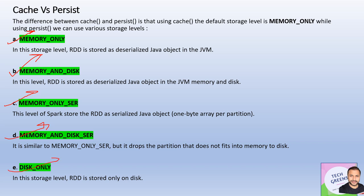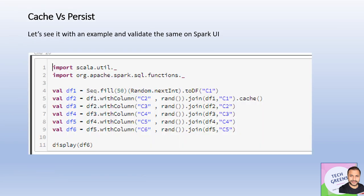The last storage level is DISK_ONLY. As the name suggests, in this case the data or the DataFrame will only be saved on the disk. These are the five storage levels provided by Apache Spark. Let's now run through an example and validate these concepts through the Spark UI.